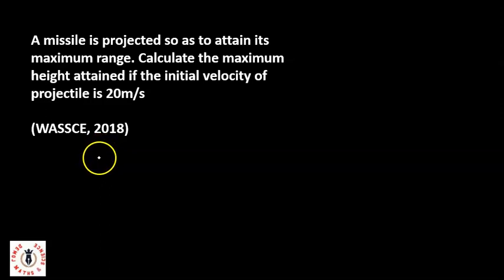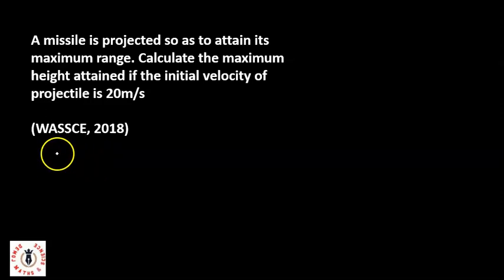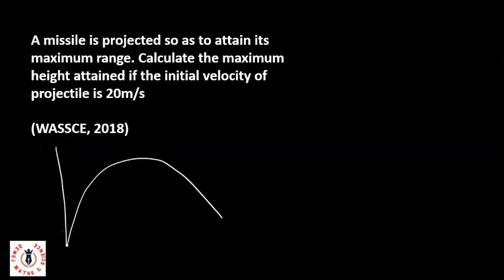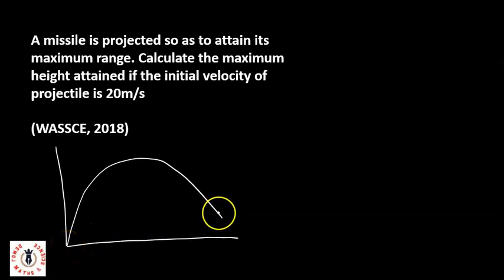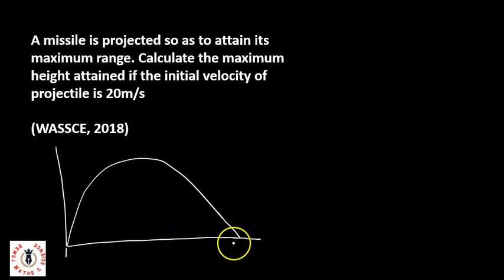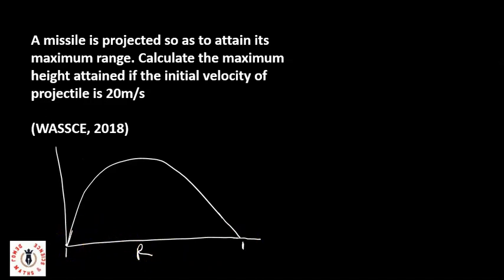The question says that a missile is projected so as to attain a maximum range. Calculate the maximum height attained if the velocity of the projectile is 20 meters per second. Let's take our diagram — the missile is projected upwards so as to attain its maximum range. The missile must have attained up to this point, which should be the maximum range R.